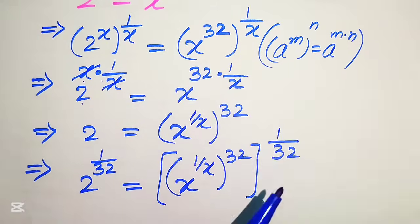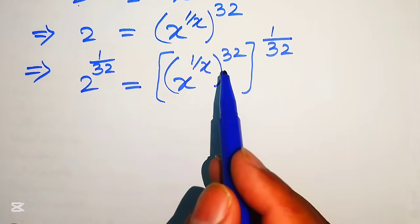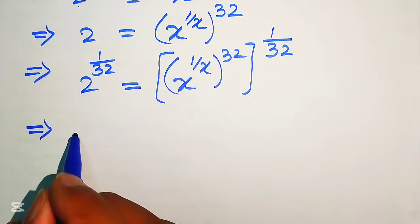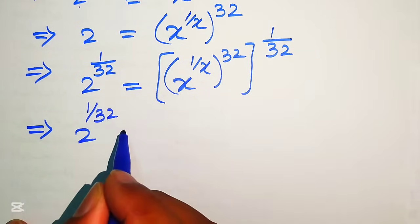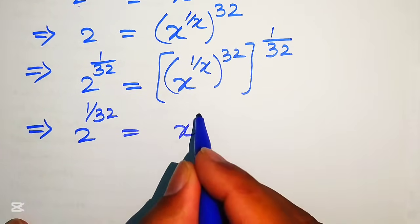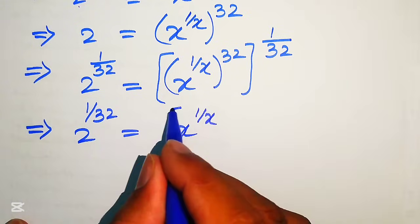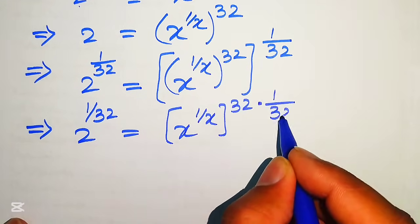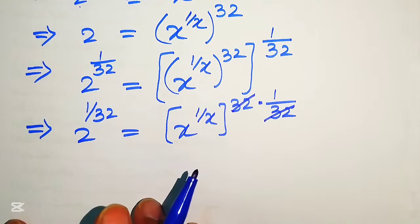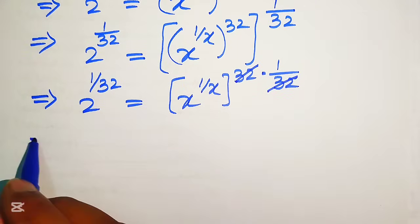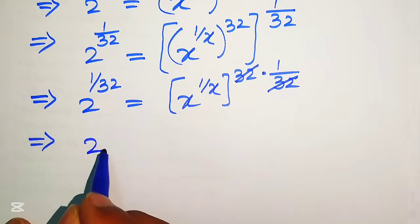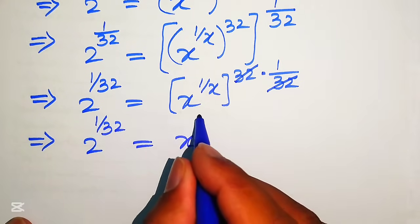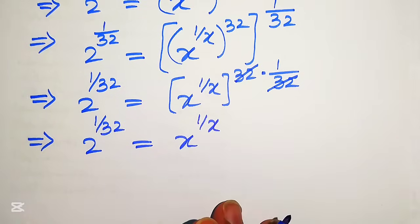Again we apply the exponent law, multiplying the two exponents. It will be written as 2 to the power of 1 over 32 equals x to the power of 1 over x, with its whole power 1 over 32 multiplied by 1 over 32. The 32s cancel, and we get 2 to the power of 1 over 32 equals x to the power of 1 over x.